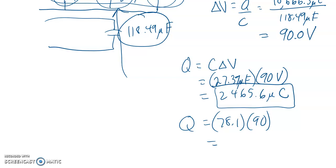So 78.1 times 90. Honestly, I was sweating there when I got that answer because I knew it was the wrong answer. And I didn't want to rerecord this. But 7,029 microcoulombs is the right answer. All right. Hope that helps.